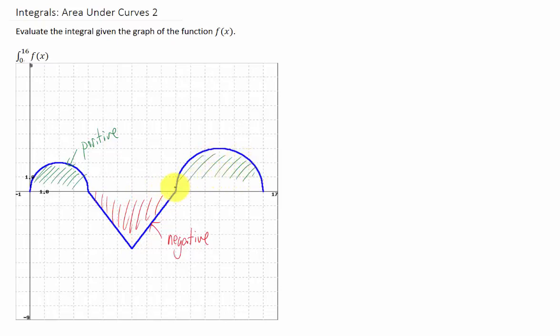Then this integral of this semicircle from 10 to 16 will also come out positive. So what are we going to do? Well, we're just going to find the areas of these two semicircles and subtract the area of the triangle, and that's going to give us our total integral from 0 to 16.